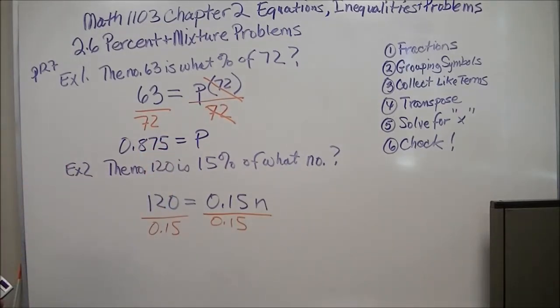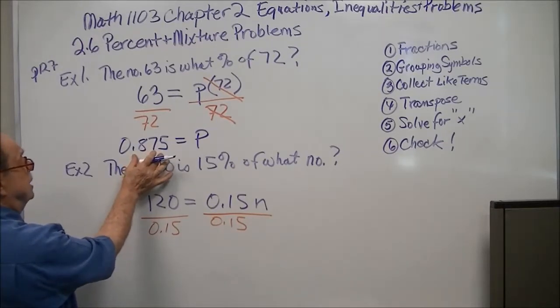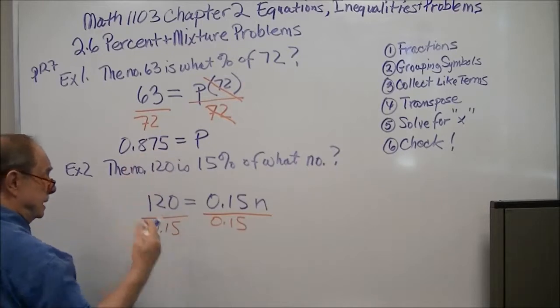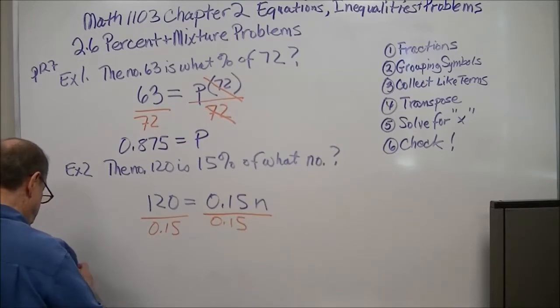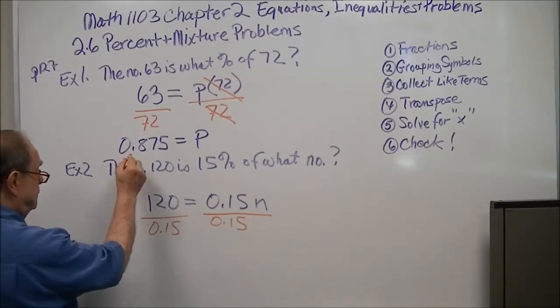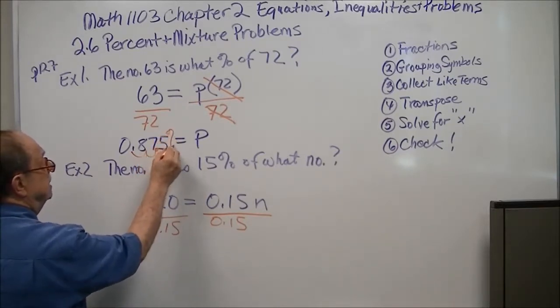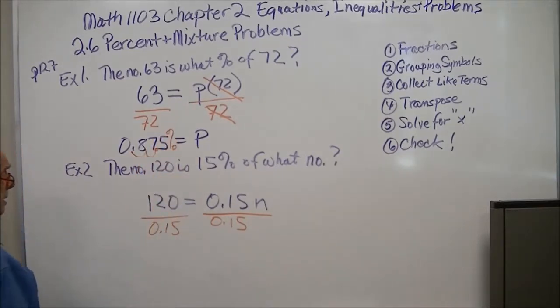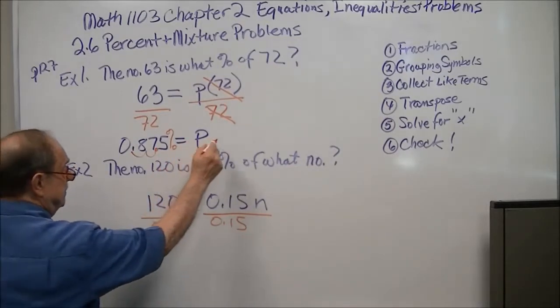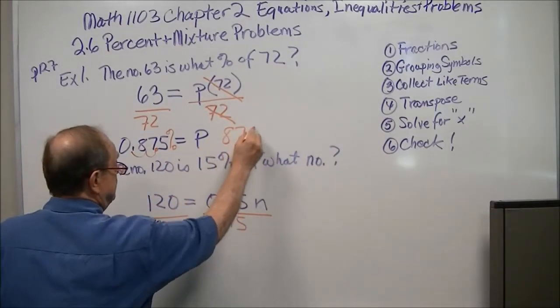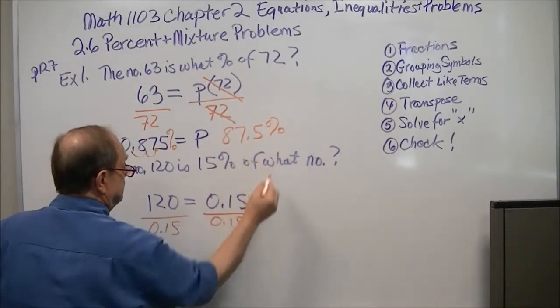But they want to know what percent that is. Well, this is a decimal fraction. The technique to change a decimal fraction to a percent, here's the basic rule: Move the decimal place over two places to the right and add a percent sign. So the answer is 87.5 percent.